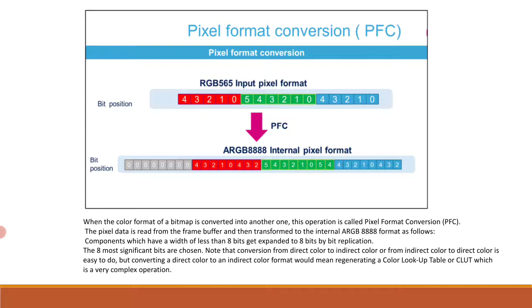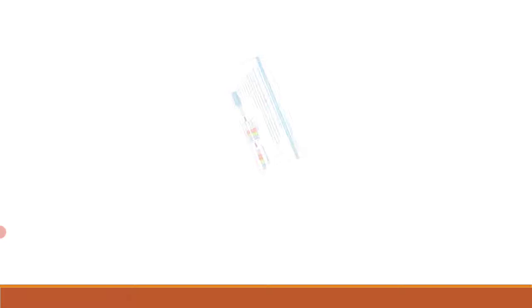CLUT stands for Color Lookup Table. In the case of indexed color for L8, AL44, and AL88 input pixel formats, the LTDC supports up to 256 entries per layer. The frame buffer contains an index value for each pixel. The CLUT is loaded with R, G, and B values that replace the original RGB values of the pixel. Each color (RGB value) has its own address positioned within the CLUT, seen as 8 bits per pixel in indirect coding.